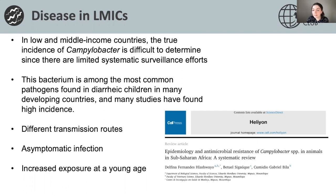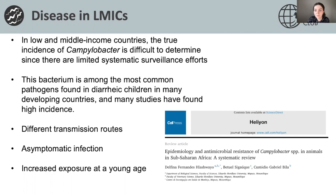Although asymptomatic carriage is known to exist at high levels in low and middle-income countries, it's not currently known how common it is in countries with less developed food safety control systems. Data has also shown that there is increased exposure at a young age, with 40% of the global foodborne disease burden affecting children under the age of five, with the highest burden per population observed in Africa.